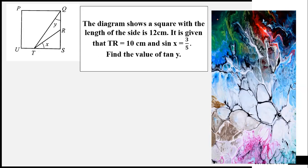Find the value of tan y. Sin x is equal to opposite side divided by the hypotenuse. Sin x is 3/5 equal to opposite side RS, hypotenuse side TR.